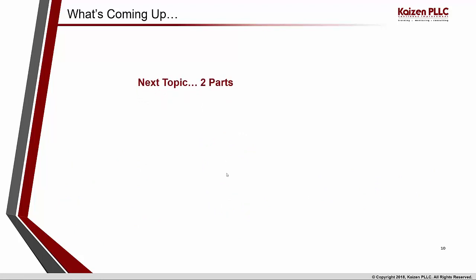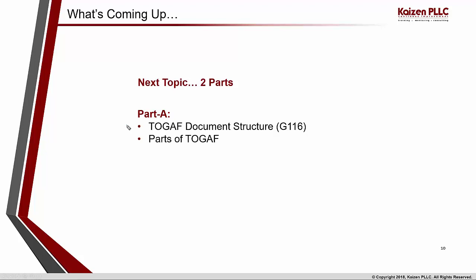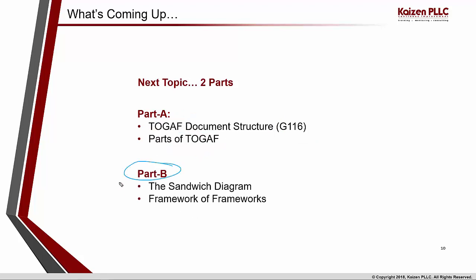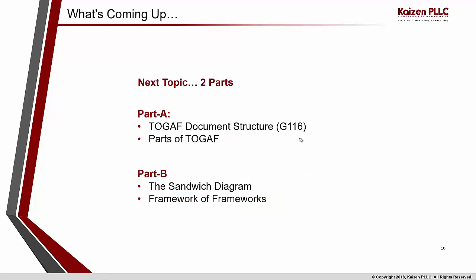In the next upcoming video, I am planning to divide it into two parts. Part A: I am going to discuss the TOGAF document structure itself — the standard, the specification, also known as G116 — and what are the key parts of the TOGAF framework and what different parts it is made up of. Part B: we will look at the sandwich diagram — how these different parts correlate and coordinate with each other — and then we will look at another concept, the framework of frameworks, explaining how TOGAF itself is made up of more than one framework.